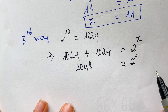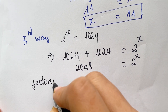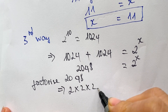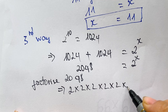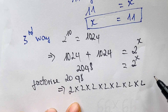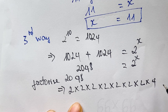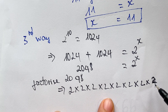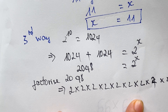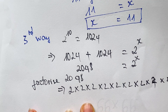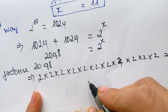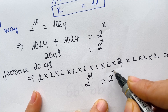Now we factorize 2048. So we have 2 times 2 times 2 times 2 times 2 times 2 times 2 times 2 times 2 times 2 times 2 — which means 2048 equals 2 power 11. Therefore 2 power 11 equals 2 power x, giving us x equals 11.